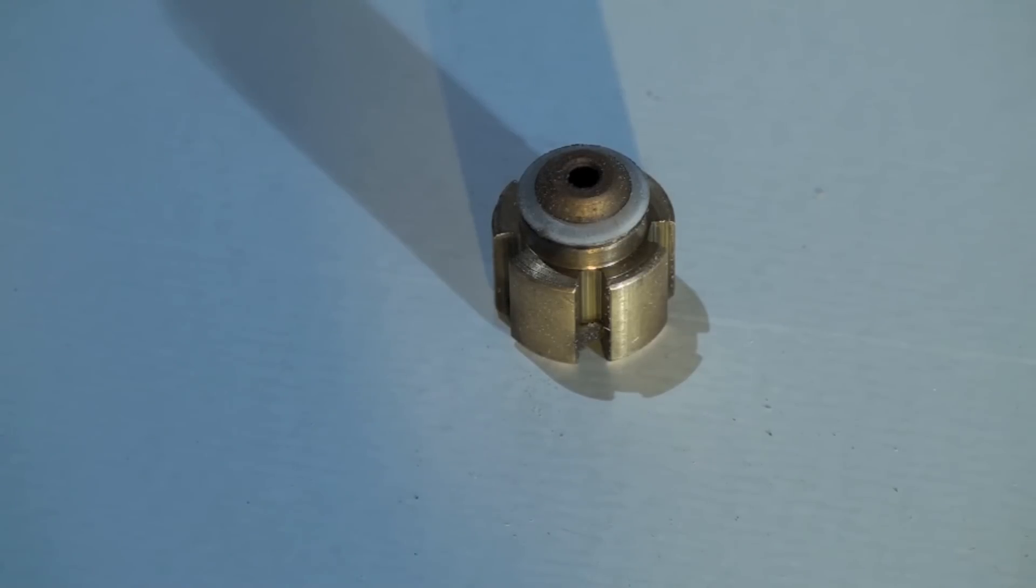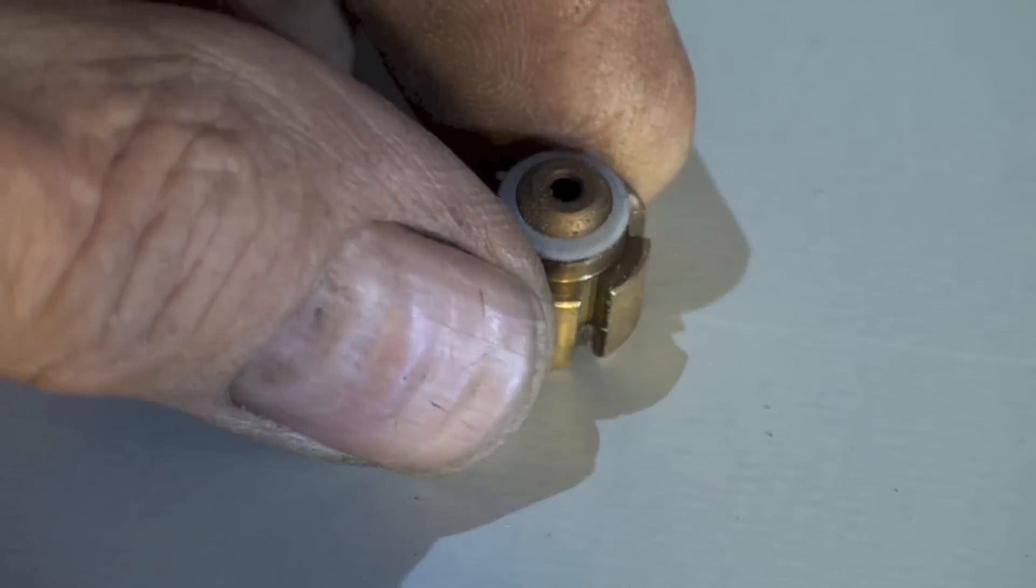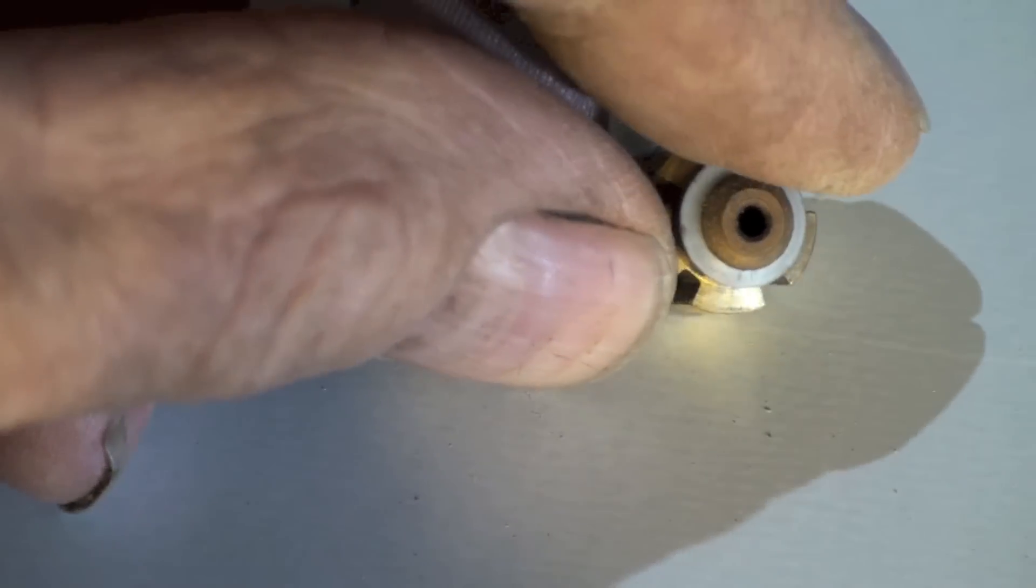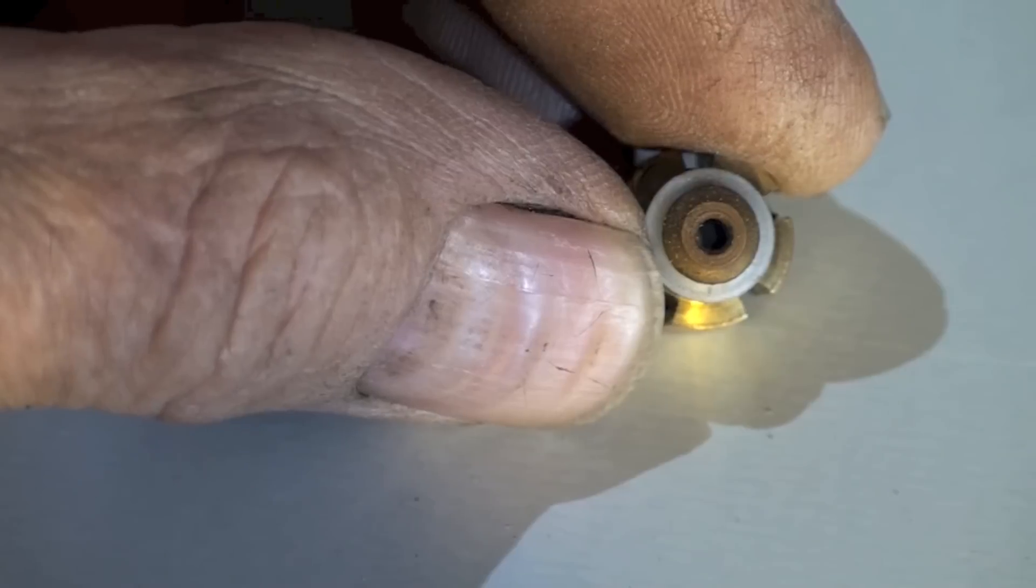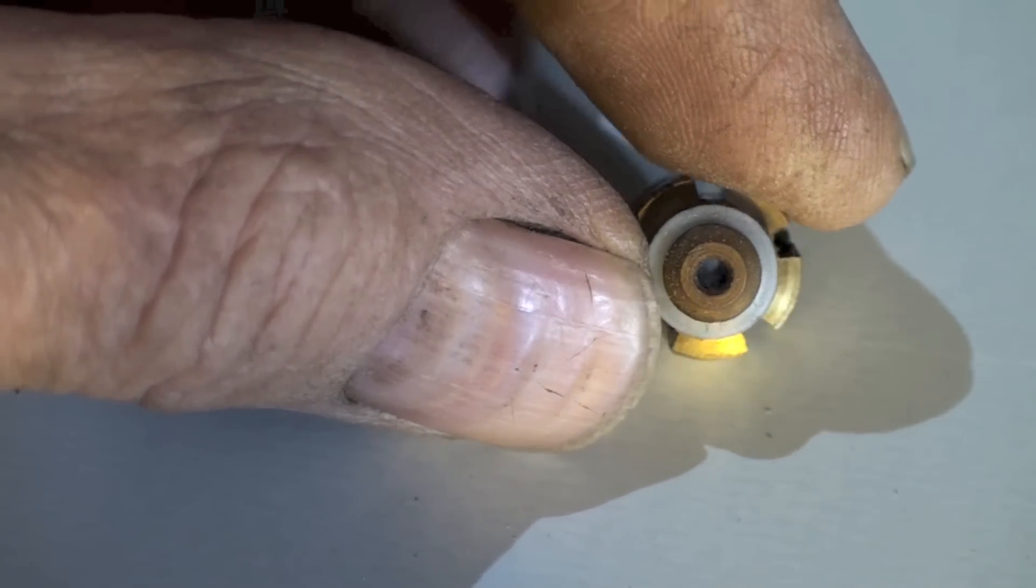If it's a heat pump, in the summertime the indoor coil's an evaporator, so you want it to go through this. This little gasket is going to hit up against a surface inside that body and only allow the refrigerant to go through that hole.